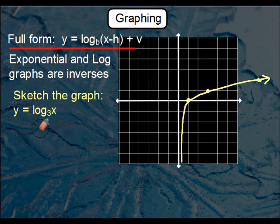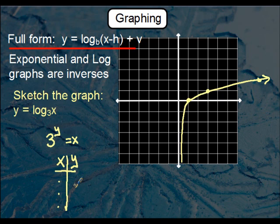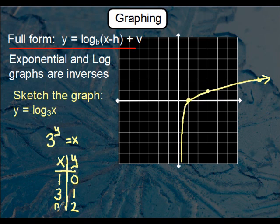There's an alternative way to graph a logarithm if you don't remember the method. Take the log of x base 3, switch it to exponential form: 3 to the power of y equals x. Then do a simple t-chart, plugging in values for y rather than x — because for logarithms everything is in reverse. If y equals 0, then x is 3 to the 0, which is 1, so you plot 1,0. If y equals 1, then x is 3, so plot 3,1. If y equals 2, then x is 9, so plot 9,2. Just go right down the list.